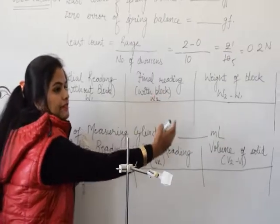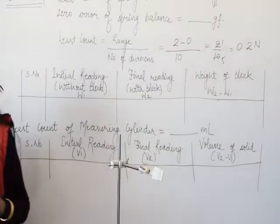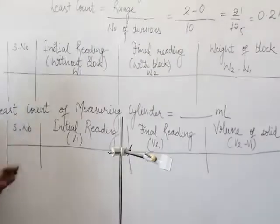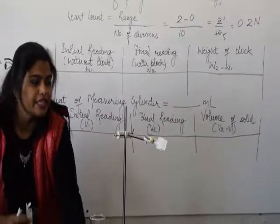Then we will hang some object here. Then we will see the final reading. And then we will calculate by subtracting W2 minus W1. It will be the weight of that block. And then we will immerse our object in this liquid.